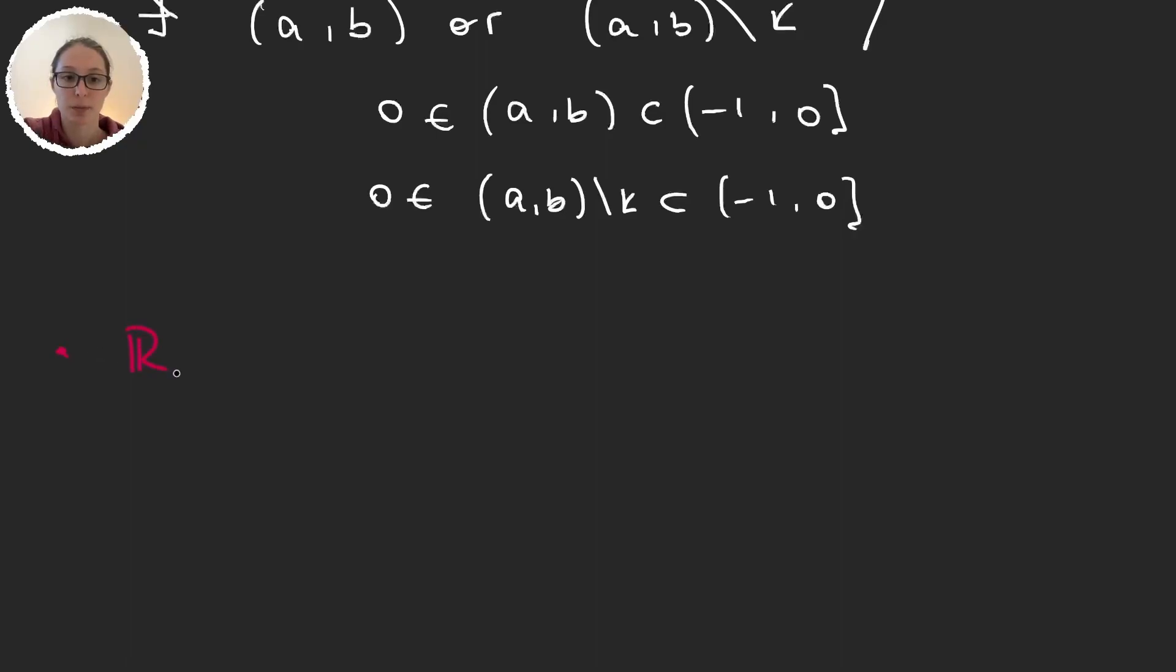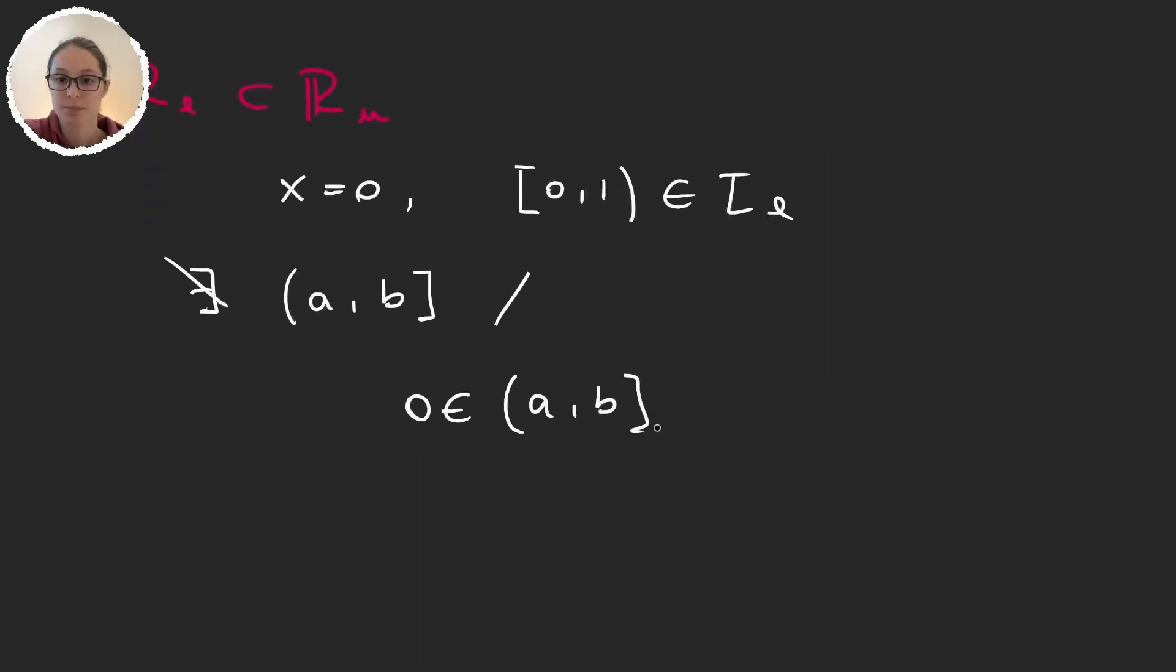To finish, a very short one again. Let's see that the lower limit topology is not contained in the upper limit topology. But again I can just take x to be zero and the set [0,1), open in one but closed in zero, is an element in the lower limit topology. But there is no set of the form open in a and closed in b such that it contains zero and is contained in [0,1), because we need the left extreme to be open and here we have it closed.